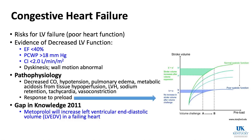The Frank-Starling curve for poor systolic function (blue) shows that a volume challenge from point A to B produces very little increase in stroke volume — you could even cause a decrease by going over the curve. A normal systolic function patient (green) given the same volume challenge shows a much larger increase in stroke volume. An important concept: giving a beta blocker acutely to someone with an increased LVEDV from a failing heart can further increase LVEDV.